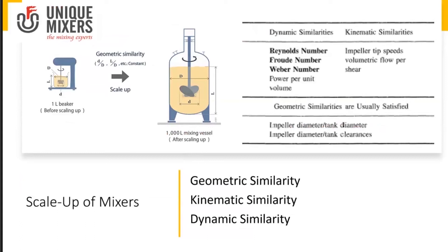Another important parameter is the scale-up of mixers. When we scale up from a lab level to a production level, certain elements need to be maintained. The first is geometrical similarity, where the dimensions of the mixing equipment are maintained in a constant ratio. For example, going from a 1 litre beaker to a 1000 litre mixing vessel, ratios such as the impeller diameter to vessel diameter and the length to diameter of the vessel are maintained. When such ratios are maintained, we say we have geometric similarity.